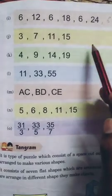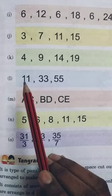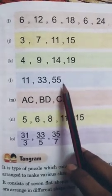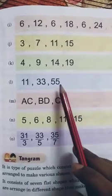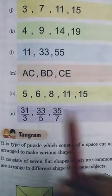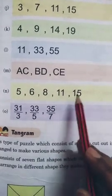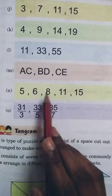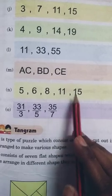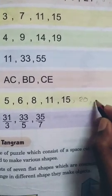Here in K, 4, 9, 14, 19. Here is the gap of 5. And here 11, 33, 55. Here is the gap of 22. Just add 22 in 55. Then add to that, like that. Now see the N. Here 5, 6, 8, 11, 15. Here increasing one more each time. Like here 5 to 6. Then 6 to 8. Here is the gap of 2. Then 8 to 11. Here is the gap of 3. Then 11 to 15. Here is the gap of 4. Then you will write 20, the gap of 5. Then 26, the gap of 6.